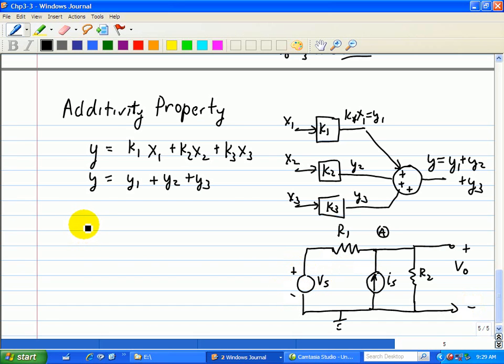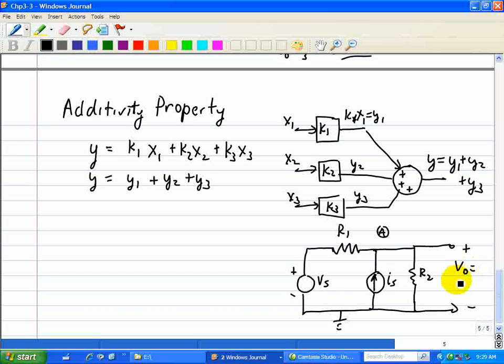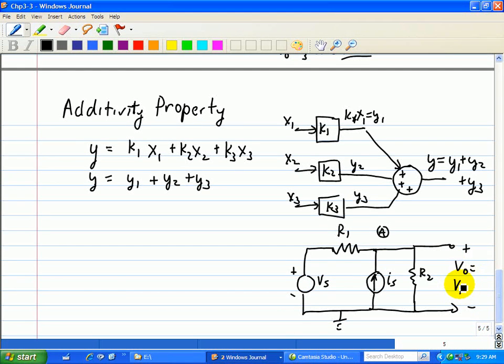So let's start off with VS. Well, VS is just going to go through where we remove one of the sources, say IS. And we want to find the output one due to the voltage source and the output two due to the current source.